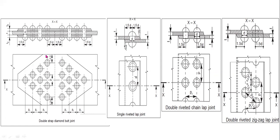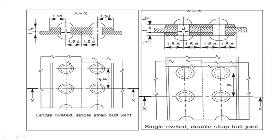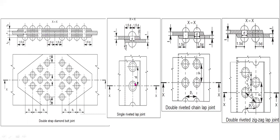A butt joint is that in which the main plates are kept in alignment, butting each other, and a cover plate or strap is placed either on one side or on both sides of the main plates. The cover plate is then riveted together with the main plates. Butt joints are of two types: single strap butt joint and double strap butt joint.